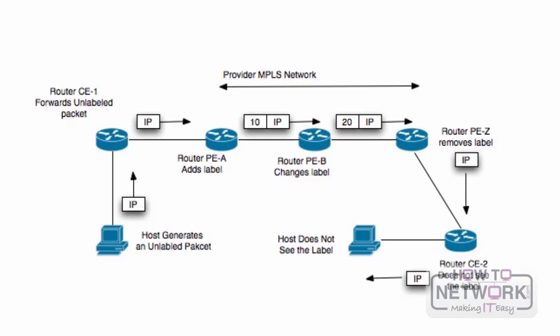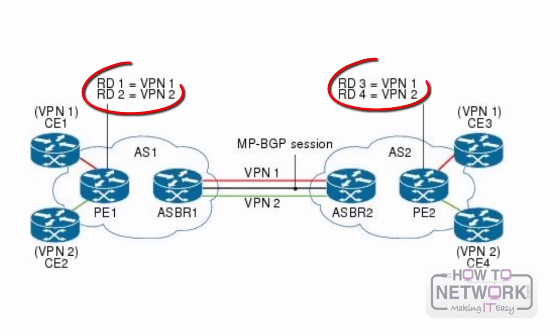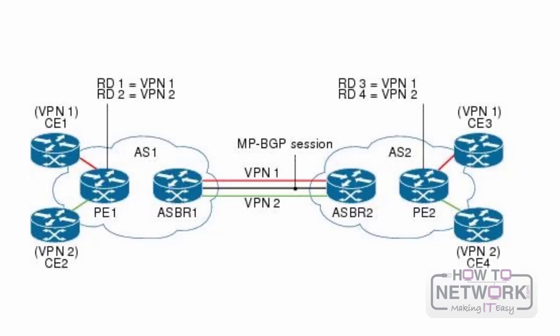A technology that improves MPLS efficiency is penultimate hop popping, which allows the second-to-last LSR in the MPLS path to be the one that pops the label, adding efficiency to the overall operation of MPLS. The RD, or route distinguisher, is a way in which the ISP can distinguish between the traffic of different customers, allowing different customers participating in the MPLS VPN to use the exact same IP address space — for example, both customer A and customer B could use the 10.10.100.0/24 range with traffic differentiated between customer RDs.